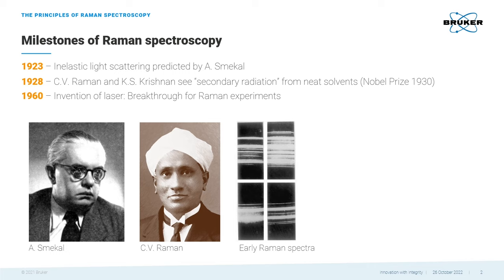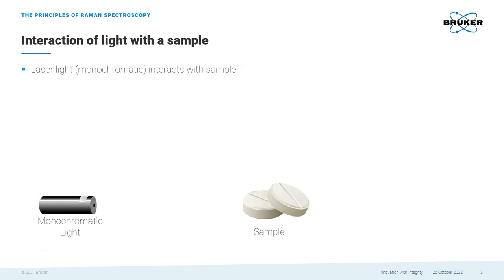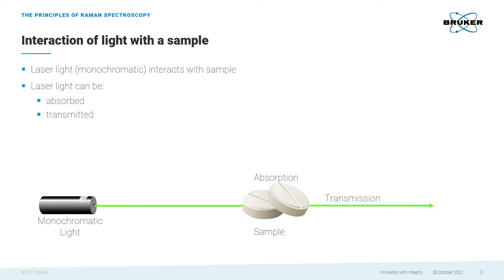And here's why. Raman Spectroscopy makes use of the interaction of the sample with the incident laser light, which is monochromatic, hence of a certain wavelength. The light can be absorbed, transmitted, or scattered.